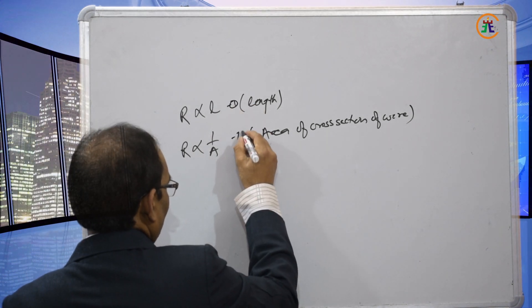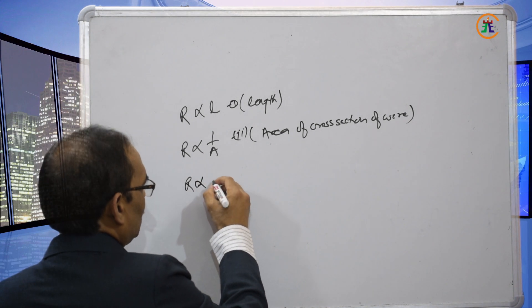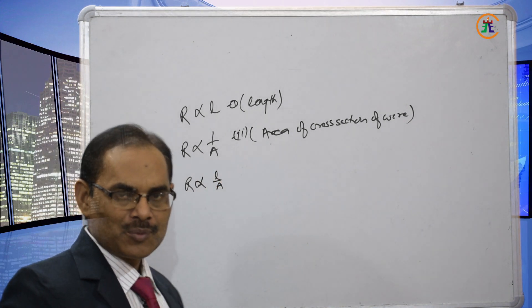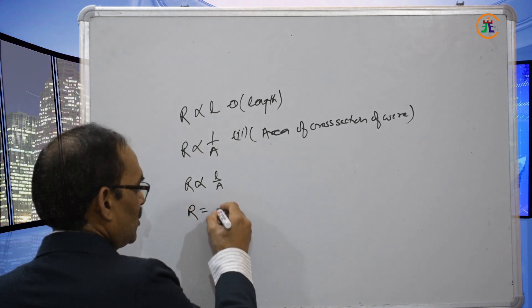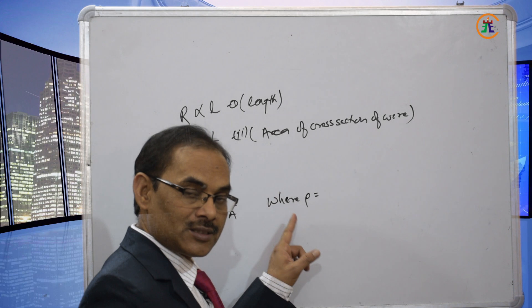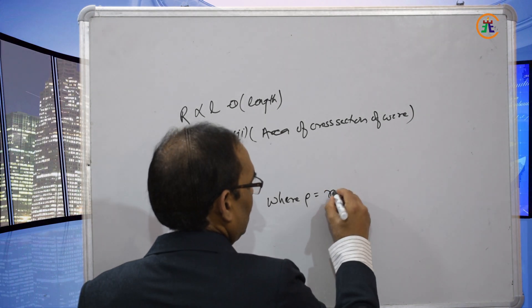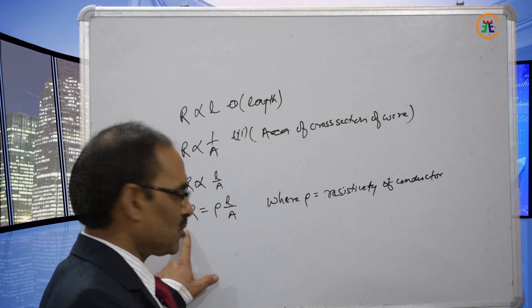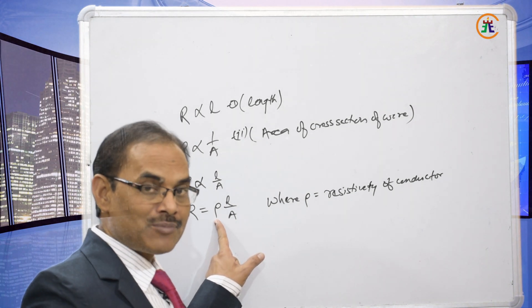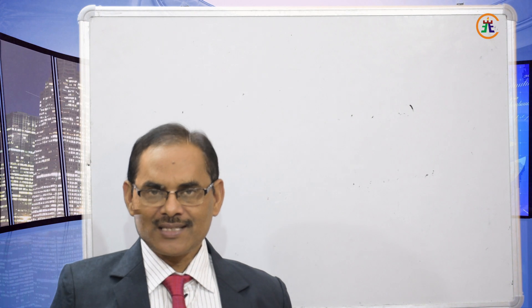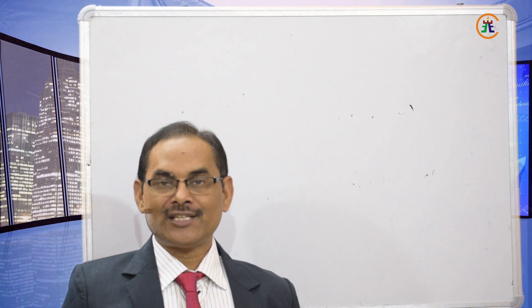Combining these two equations, R is directly proportional to length divided by area A. Removing the proportionality sign, we introduce a constant: R = ρl/A, where ρ (rho) is the proportionality constant known as the resistivity of the conductor. The resistivity depends upon temperature; when temperature is constant, resistance depends on length, area of cross-section, and nature of the conductor.